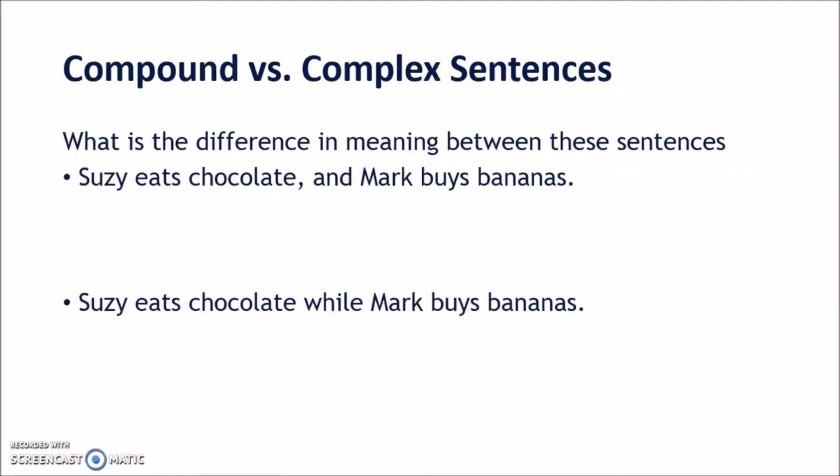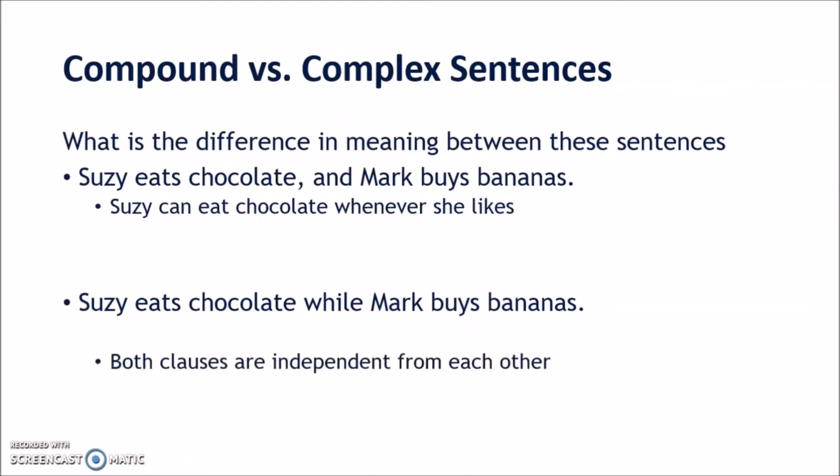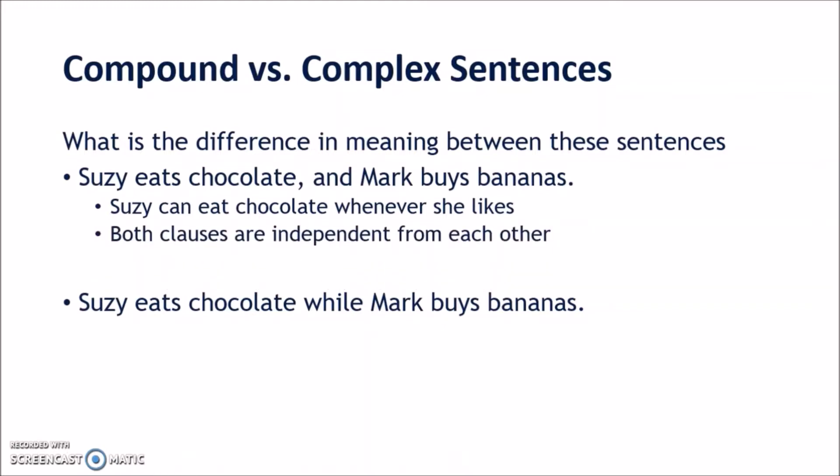Compound sentences — generally you'll be okay with those. What worries me more is complex sentences. A complex sentence has a particular meaning in English. Consider these two: 'Susie eats chocolate, and Mark buys bananas' — that's the first. The second is 'Susie eats chocolate while Mark buys bananas.' In the first sentence, both clauses are independent from each other. That independence is what makes them easier to understand and what makes it a compound sentence.